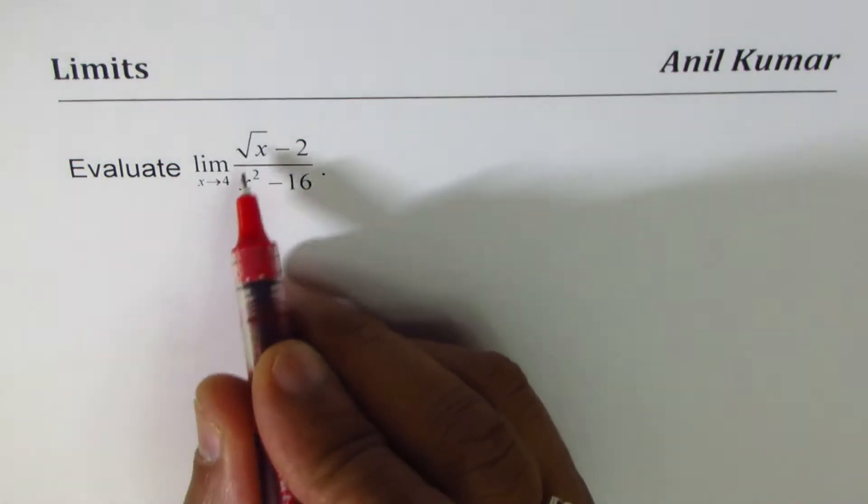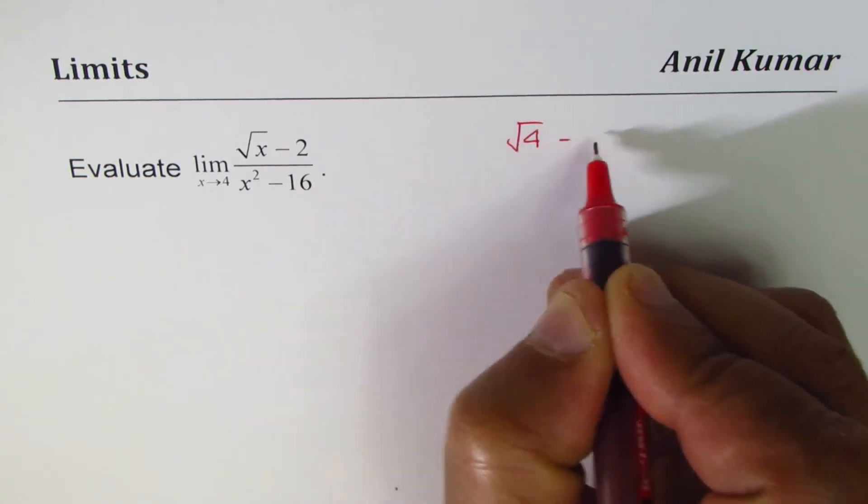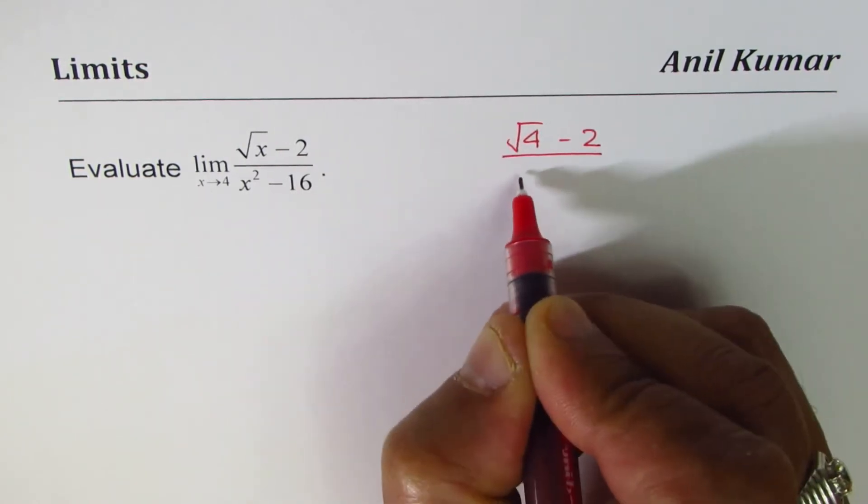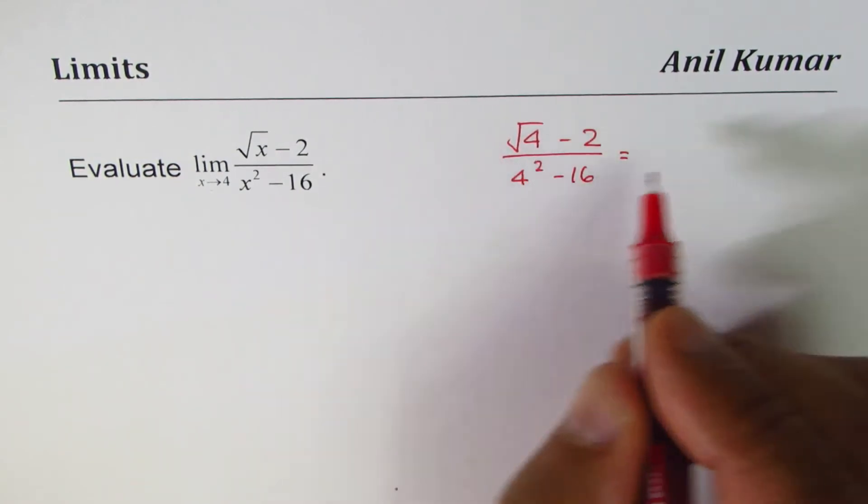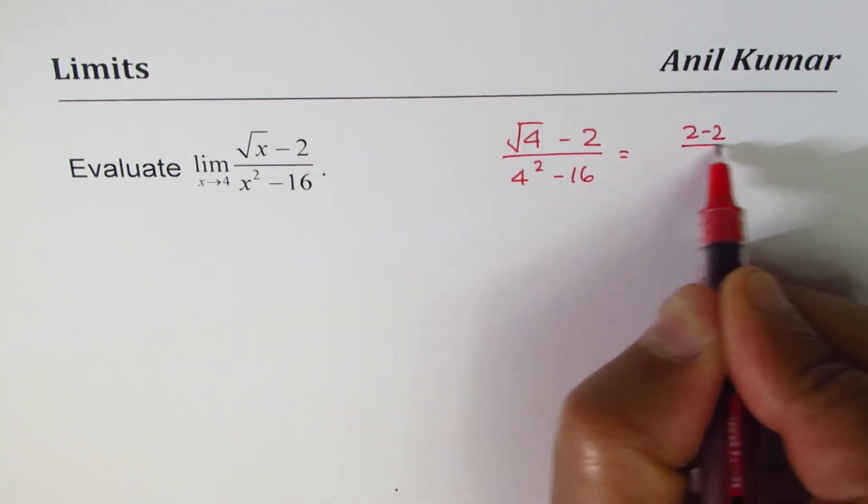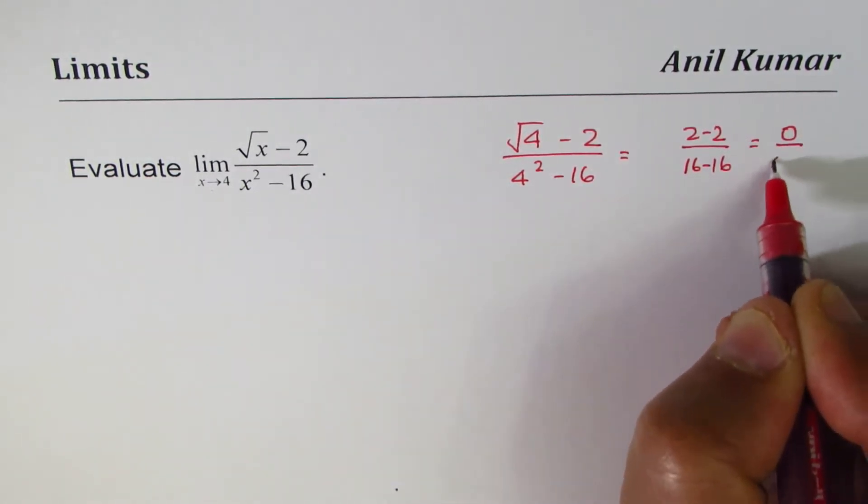Now if I substitute 4 here, what do we get? We get square root of 4 minus 2 divided by 4 squared minus 16, and that is 2 minus 2 divided by 16 minus 16, and that is 0 over 0.